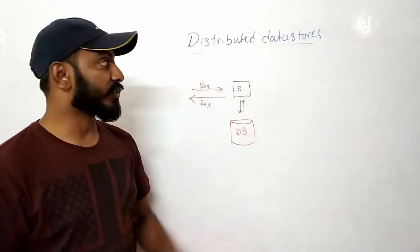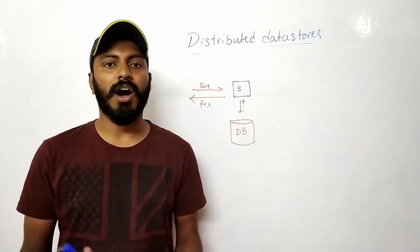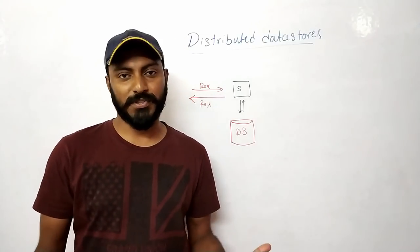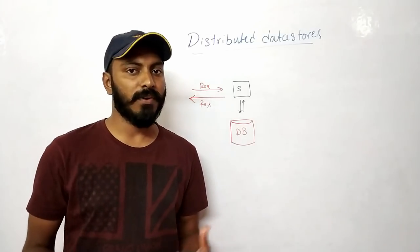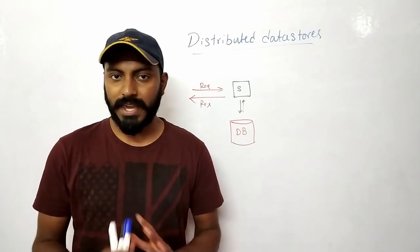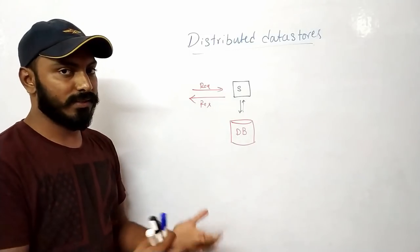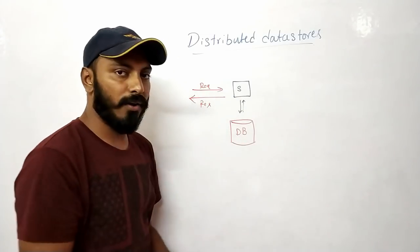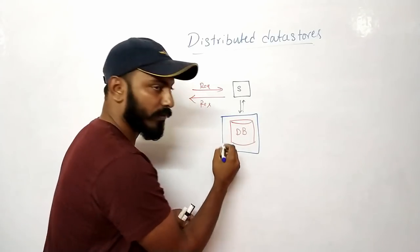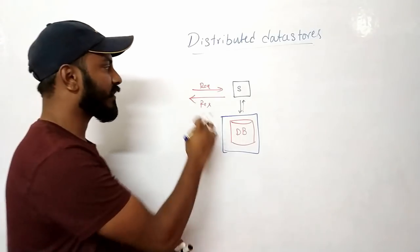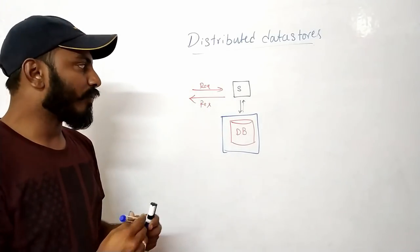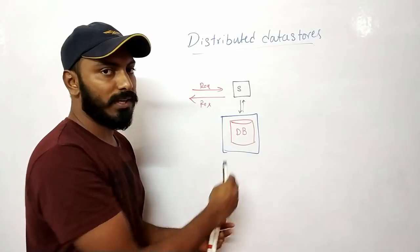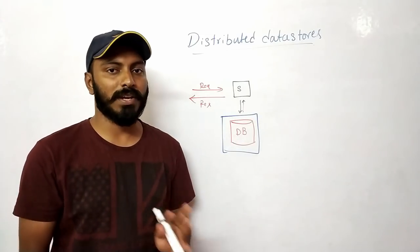In this session, let's learn what distributed data stores are and how we scale databases. There are two kinds of databases: RDBMS and NoSQL. Let's discuss both from different perspectives. For example, imagine we have a word-to-PDF service with a single server and a single database. The service takes requests, converts word to PDF, and records entries in the DB so users can look up their conversion history.